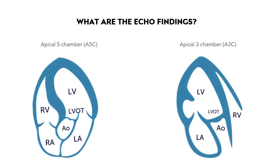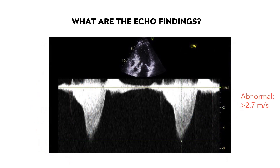For echo findings, obtain an apical 5-chamber or apical 3-chamber view and place your continuous wave Doppler through the LVOT and aortic valve. Look at the shape of the blood flow leaving the left ventricle. Initially the velocity slowly increases, then suddenly it abruptly increases. As the LVOT narrows, the obstruction worsens, creating a spiral of lower pressure, more suction of the mitral valve, more SAM, increased velocity, and more obstruction until ultimately blood flow stops. This late-peaking envelope is the characteristic finding in LVOTO.